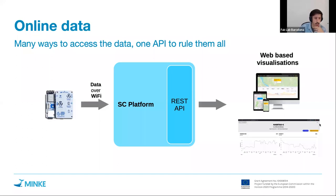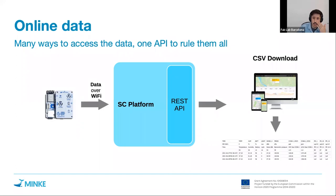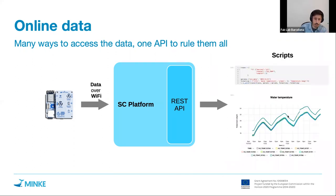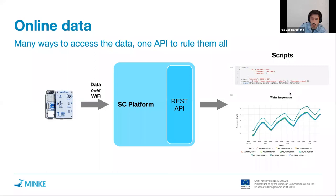When you do a CSV download, our platform processes the data from your device and you can download it via email. What we'll start seeing today is using scripts to access the API. The power of the API doesn't reside only in web visualizations but also in the ability to have a script that does requests in an automated way, so we can do more advanced things with the data — analyze it, calibrate sensors, or visualize it in any way not limited by the platform itself.